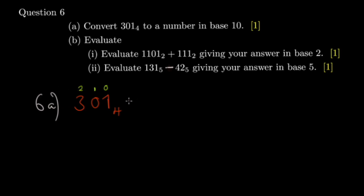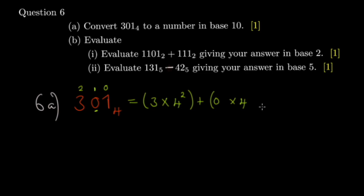Afterwards, take the number — use brackets please — take the number, take the base, and the little label numbers should be the power. So you take each digit and multiply it by the base raised to its corresponding power. We encourage you to always use brackets because it can get messy and we want you to be meticulous and careful.